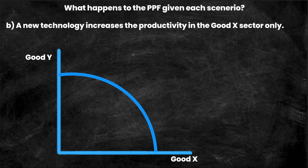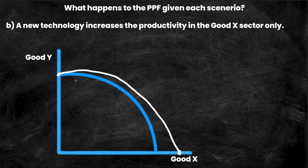In example B, a new technology increases productivity in the good X sector only. Nothing changed in the good Y sector, so nothing changes at that y-axis intercept. But because technology increased productivity for good X, we're now able to produce more of good X with the same amount of resources, while producing the exact same amount of good Y. Our PPF curve rotates outward — it pivots on the y-intercept — showing an increase for good X and no change for good Y.